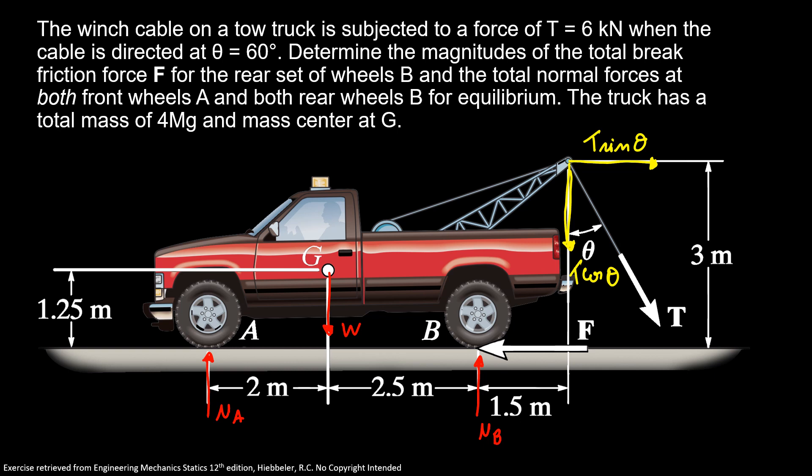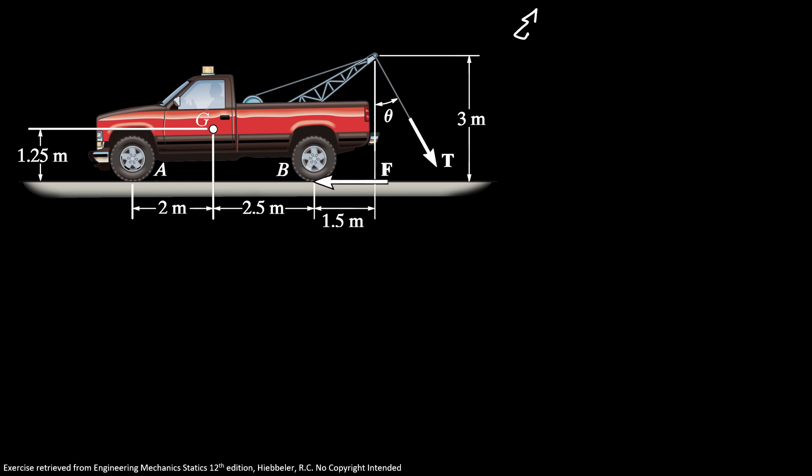So now we're going to start doing the sum of forces in x-axis equals 0, because I just have my tension sine of theta and my friction force F. So I have T sine theta minus F equals 0. Our T is 6, our theta is 60, and we have friction force. So my friction force is equal 5.20 kN.